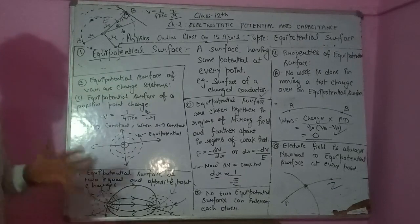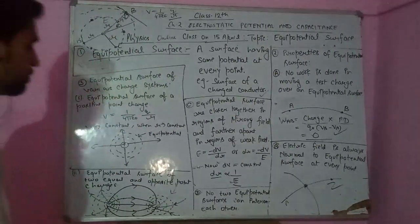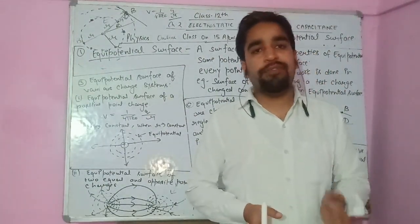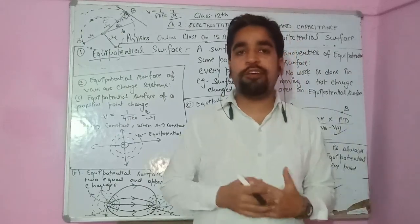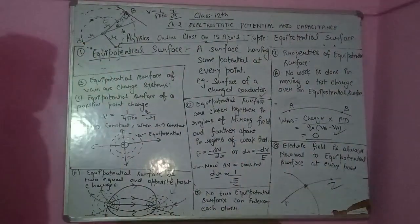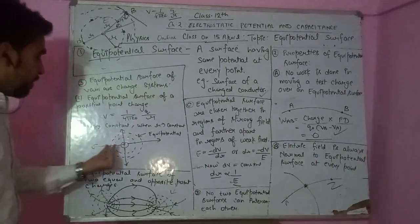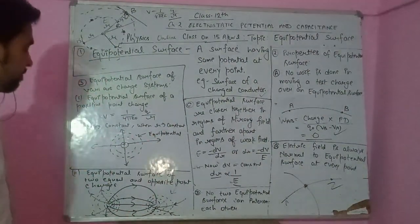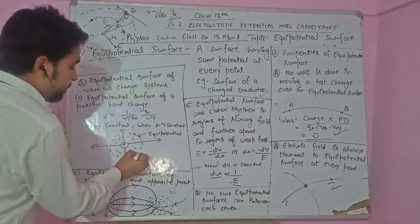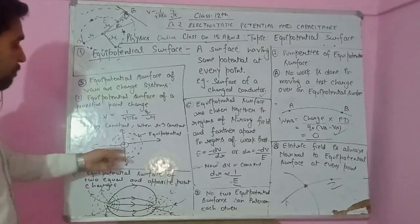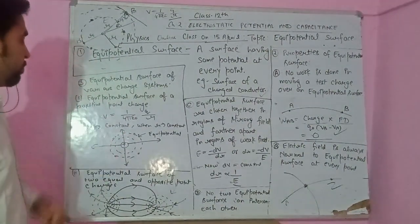Now let us study equipotential surfaces for various charge systems. We will take different kinds of charge configurations and draw their equipotential surfaces. For a point charge, the electric field is radially outward. All points at the same distance from the point charge have the same potential, so the equipotential surfaces are concentric spheres centered on the charge.